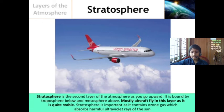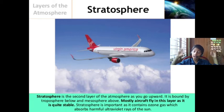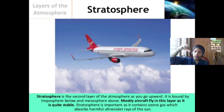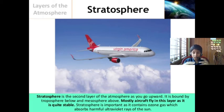Stratosphere is important as it contains ozone gas which absorbs harmful ultraviolet rays of the sun. The ozone in the stratosphere picks up the ultraviolet rays and does not let them reach the Earth's surface. If there was no ozone, we would be too hot — there would be more degrees Celsius than normal.